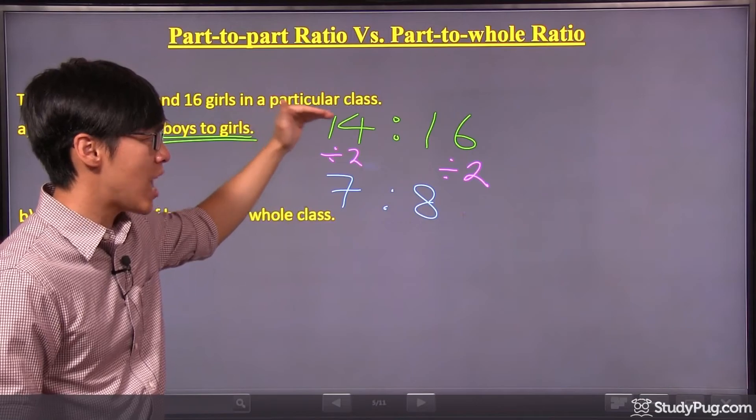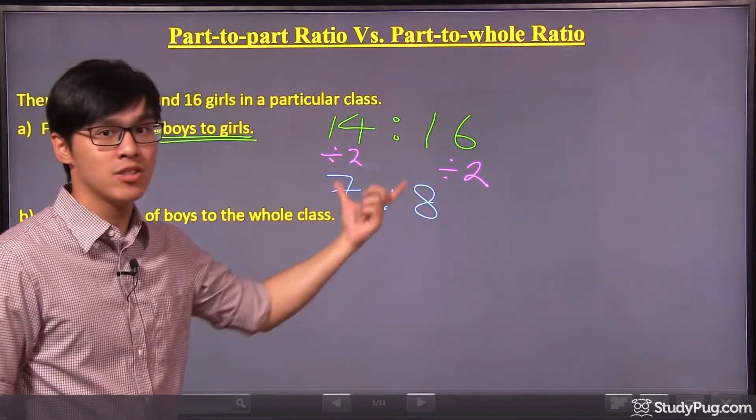Alright, so even though it's the right answer, you have to scale it down, reduce it to 7 to 8.